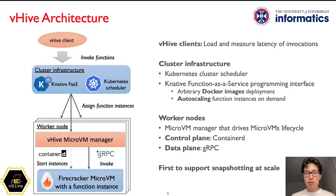At the high level, VHIVE architecture is similar to AWS Lambda. For benchmarking, VHIVE features a number of clients that drive the function invocation traffic and measure the latency and throughput of the system. VHIVE employs K-Native and Kubernetes for managing and auto-scaling functions in a serverless cluster, and Amazon Firecracker micro VMs that run untrusted function handles atop of the worker hosts. To integrate Kubernetes with Firecracker, we introduced the Micro VM Manager component that controls the VM lifecycle via container D and forwards the invocations to the appropriate instances with jrpc.